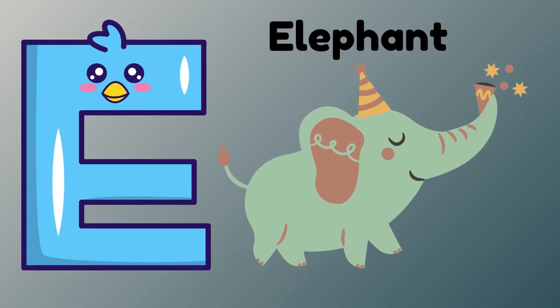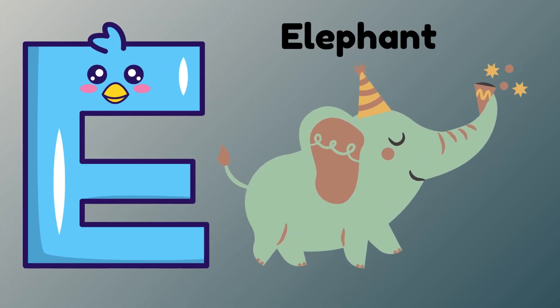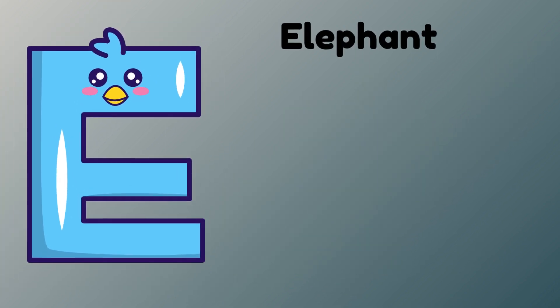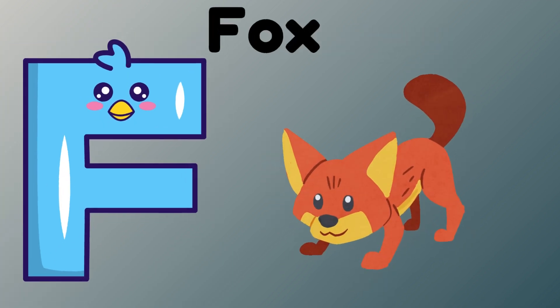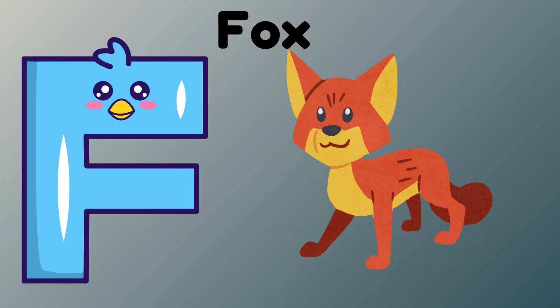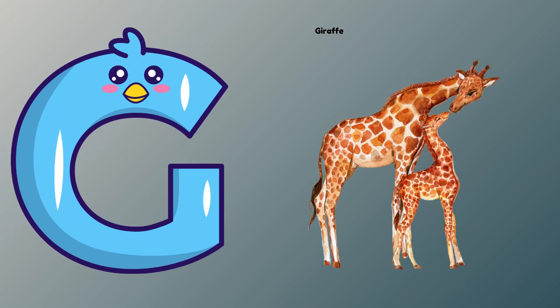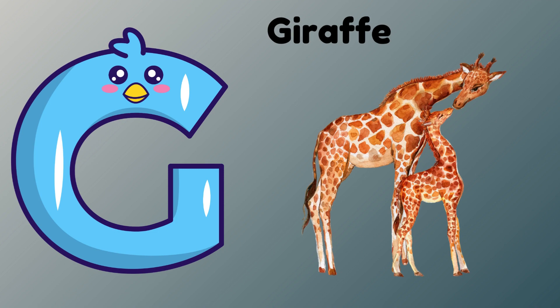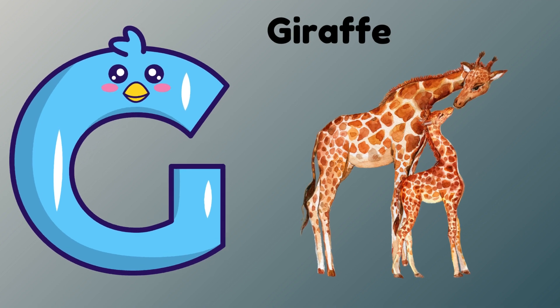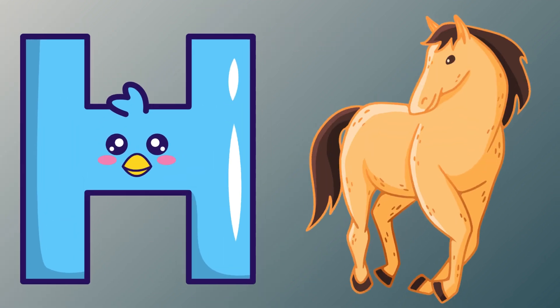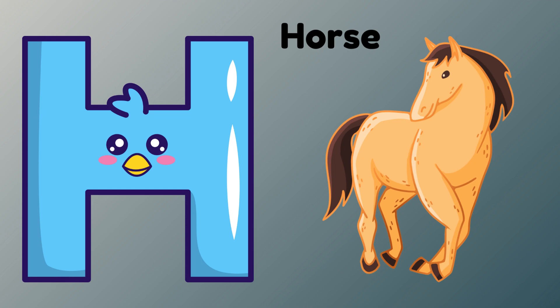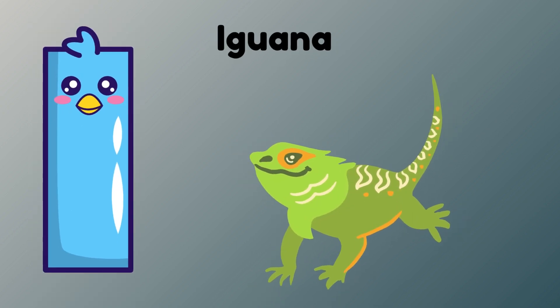E is for Elephant. E. Elephant. F is for Fox. F. Fox. G is for Giraffe. G. Giraffe. H is for Horse. H. Horse.